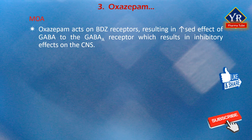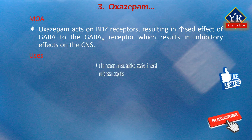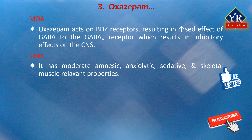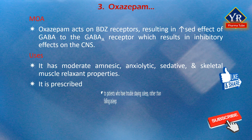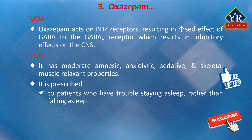Oxazepam acts on benzodiazepine receptors, resulting in an increased effect of GABA at the GABA-A receptor, which produces inhibitory effects on the central nervous system. Oxazepam has moderate amnesic, anxiolytic, sedative and skeletal muscle relaxant properties compared to other benzodiazepines. It is an intermediate-acting benzodiazepine with a slow onset of action, so it is usually prescribed to individuals who have trouble staying asleep rather than falling asleep.